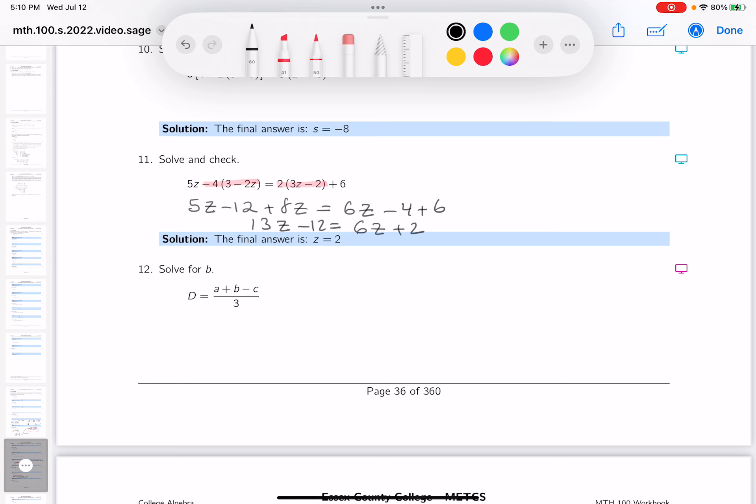What I'm going to do now is subtract 6z from both sides. What do you get? Let's see, 13 minus 6 is going to be 7z minus 12. And then on the right side, 6z minus 6z is no z's, and I just get 2.